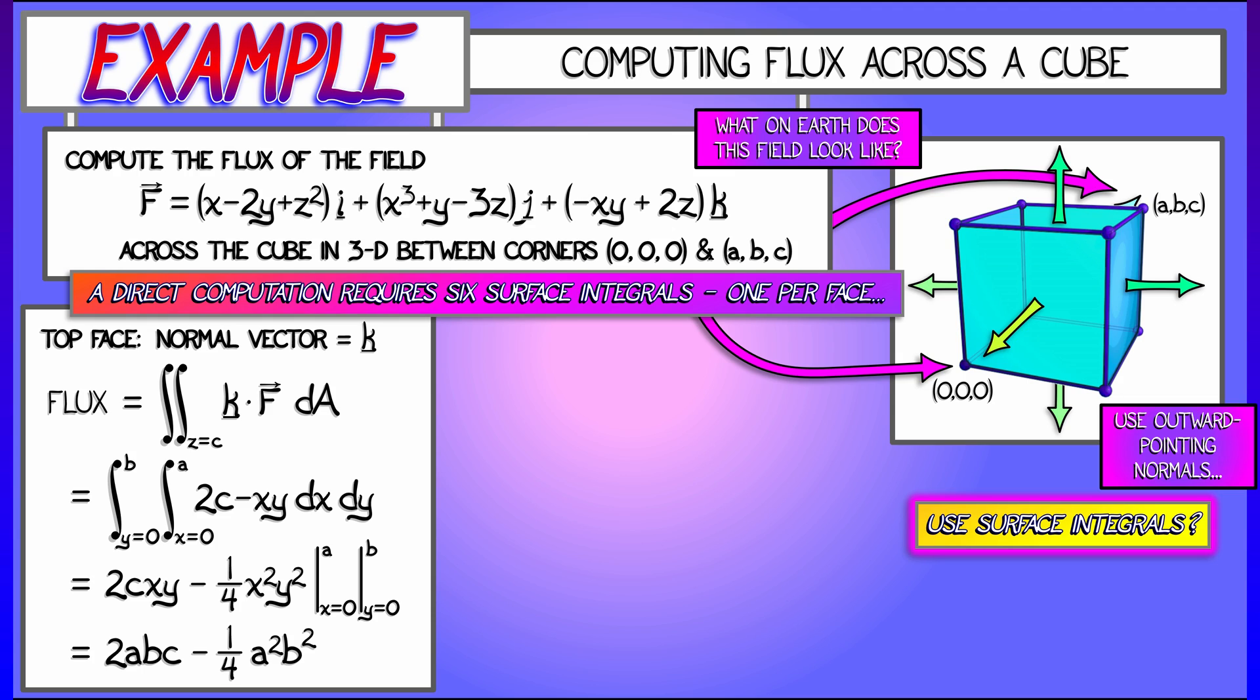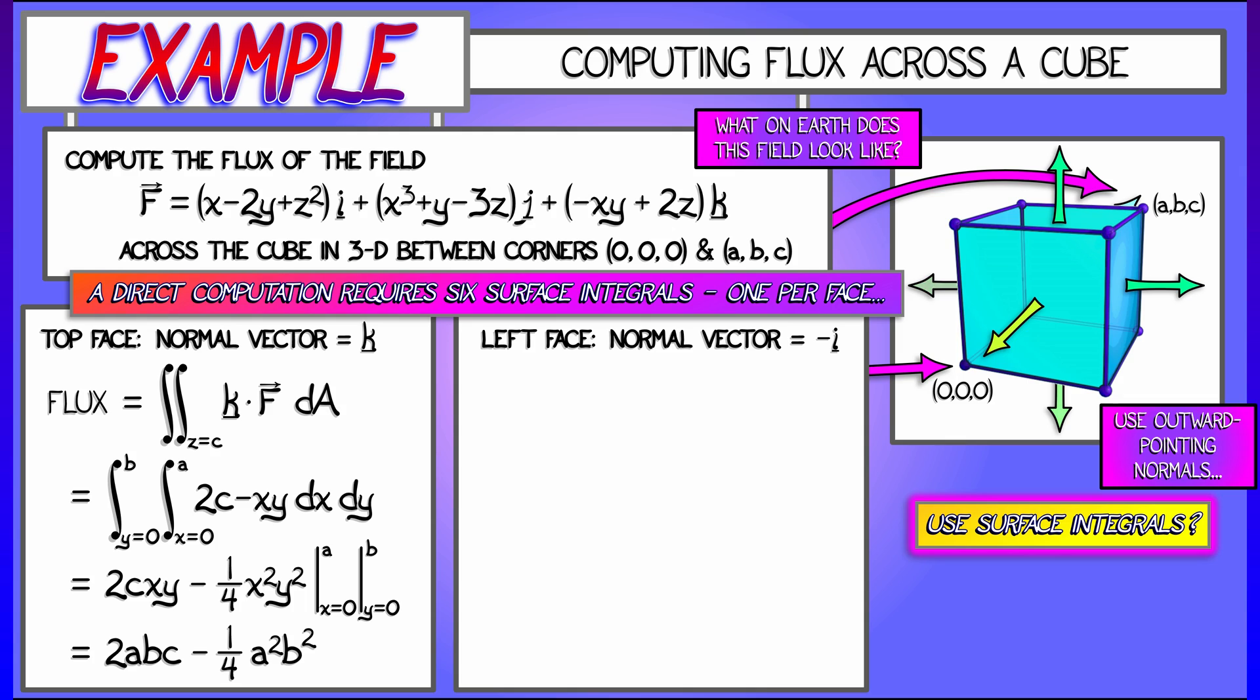That is how much flux this vector field f passes across the top face of this cubicle region. Now we have more to go. We have to do the left face. Let's say the normal vector is -i, then I have to take the dot product of f with that unit vector -i.